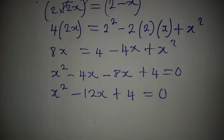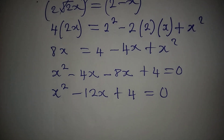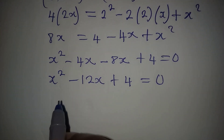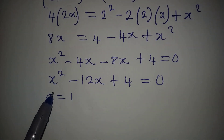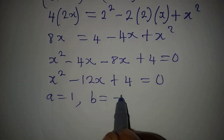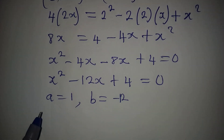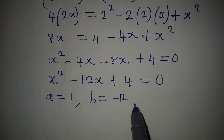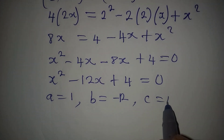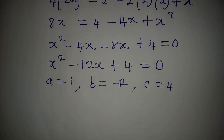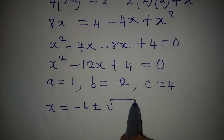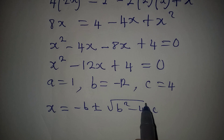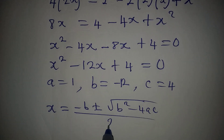This is a quadratic equation and we can solve it using the formula method. Here a = 1 (coefficient of x²), b = −12 (coefficient of x), and c = 4 (the constant). The formula is x = [−b ± √(b² − 4ac)] / 2a.